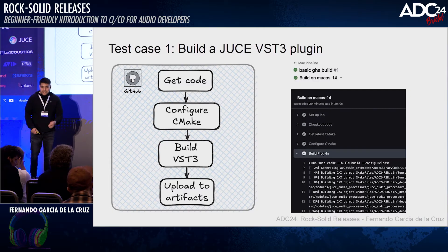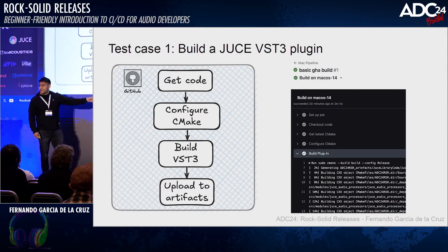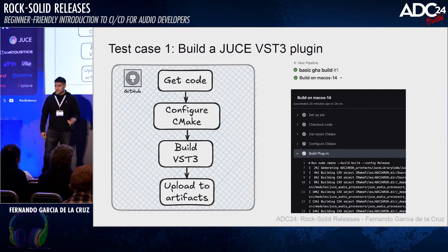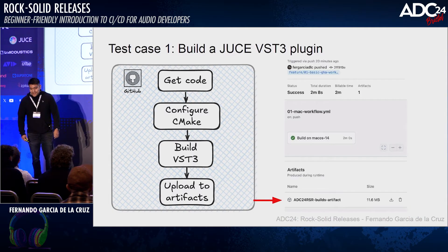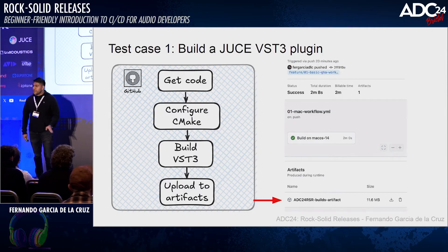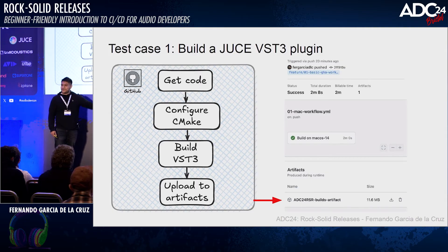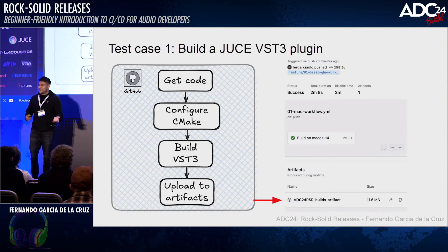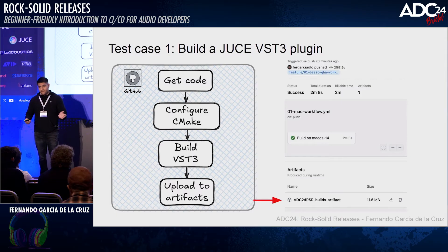GitHub Actions is quite nice in that you can have real-time feedback — you can see the logs of what your current job is doing and monitor in real time. And if everything goes okay, at the end of your GitHub Actions report you will have a little downloadable file containing your plugin compiled in VST3, for example. This is already super nice.